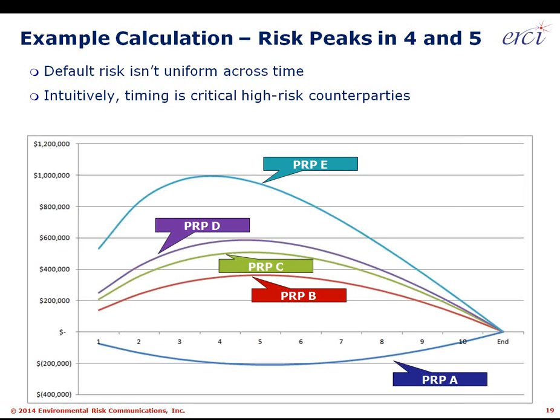One sensitivity analysis I ran: the healthier the company, the more likely that cost times probability of default peaks in the middle of the project duration. The less healthy the company, the earlier the risk peaked. This tells us that if we're really worried about controlling counterparty risk, we would do something special in managing the counterparty risk of D and E — the companies in the bottom third of credit scores — and focus particularly on companies in the bottom 5% of the economy, where most bankruptcies and financial risk will originate.